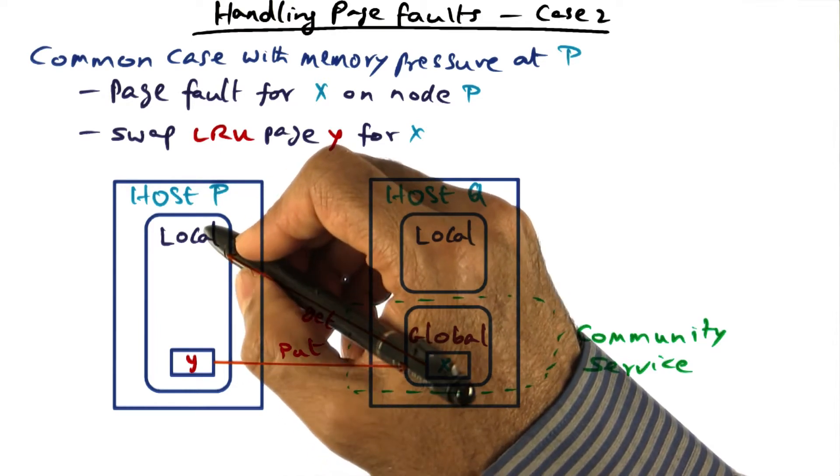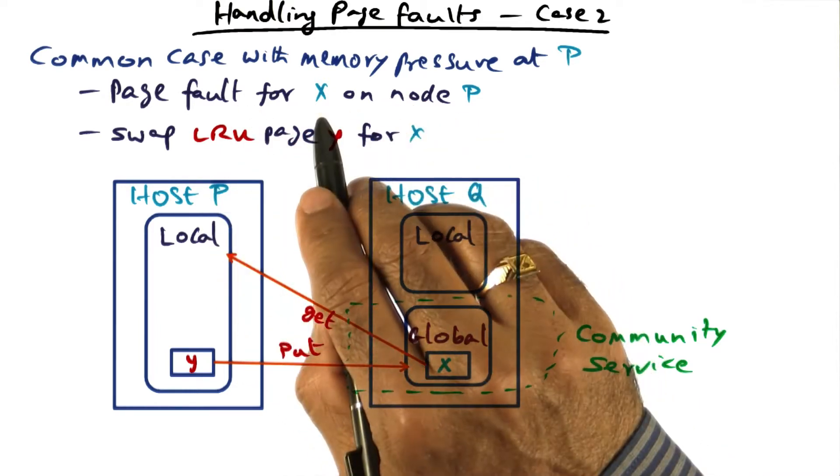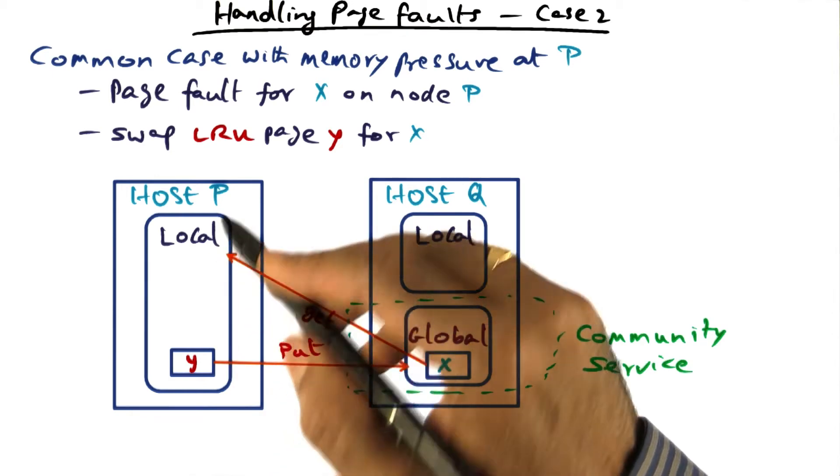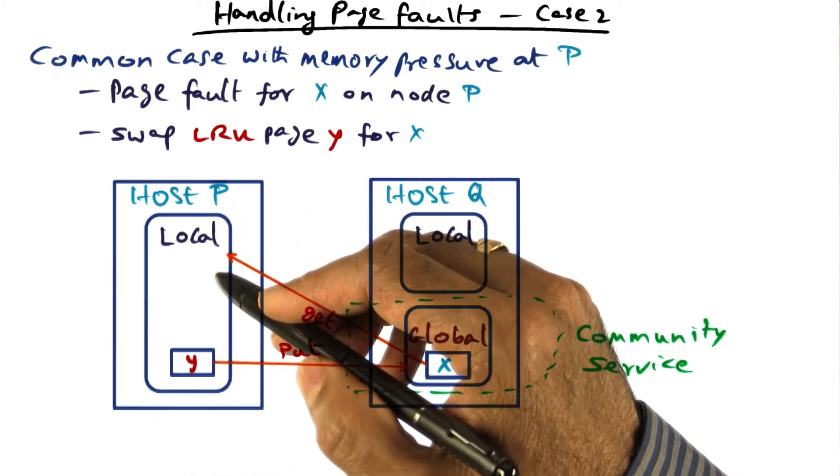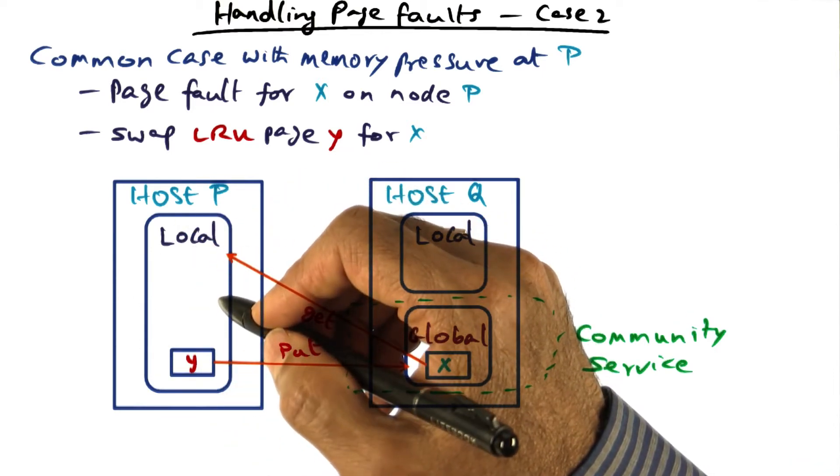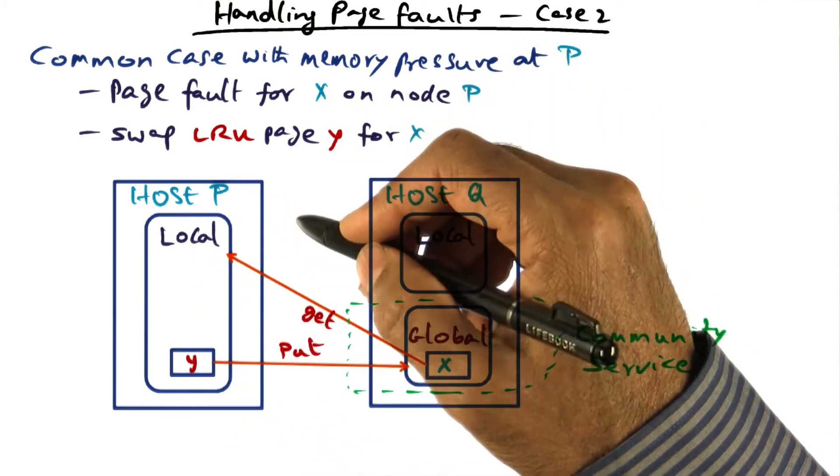And now, if there is another page fault for some new page on P, then there's no other option on host P except to throw out some page from its current working set in order to make room for this missing page.